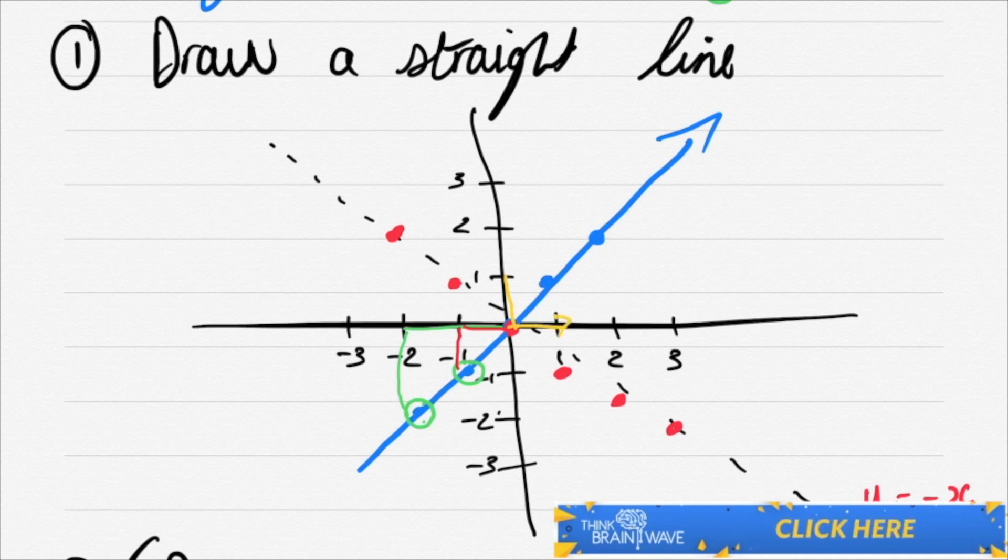With this said, we actually need to realize that your gradient is m is equal to the change in y over the change in x. This can also be written as y2 minus y1 over x2 minus x1.